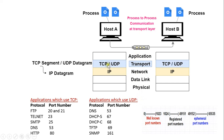TCP uses segment as the unit of communication and the unit of communication for UDP is datagram. When TCP is used at the transport layer, the TCP segment is encapsulated in the IP datagram at the network layer. And when UDP is used at the transport layer, the UDP datagram is encapsulated in the IP datagram at the network layer.